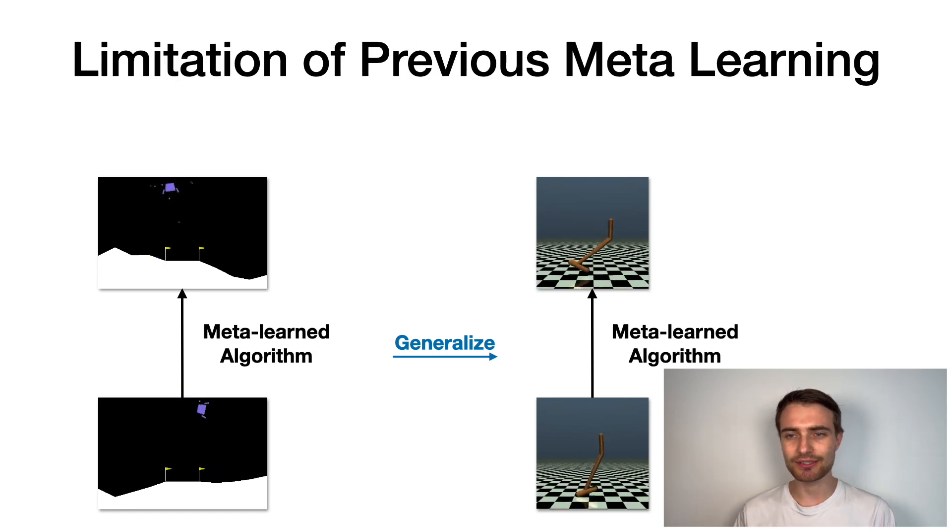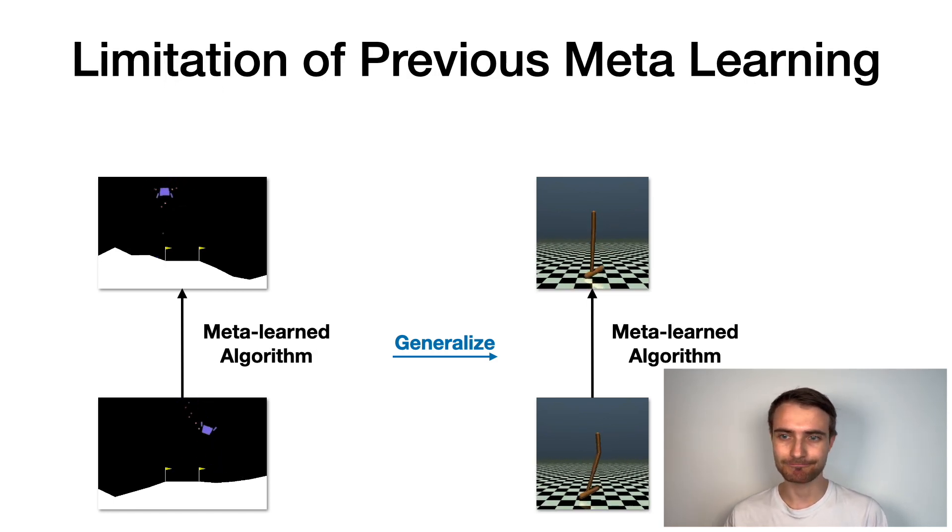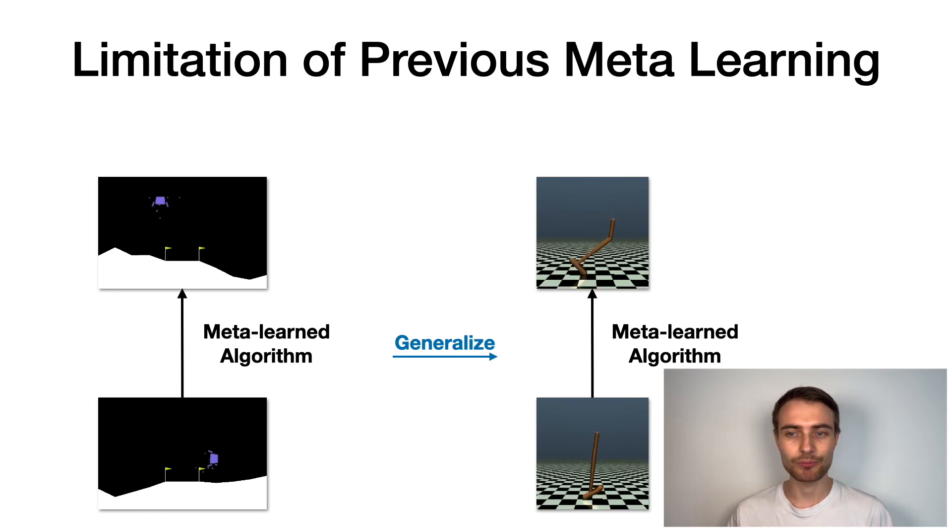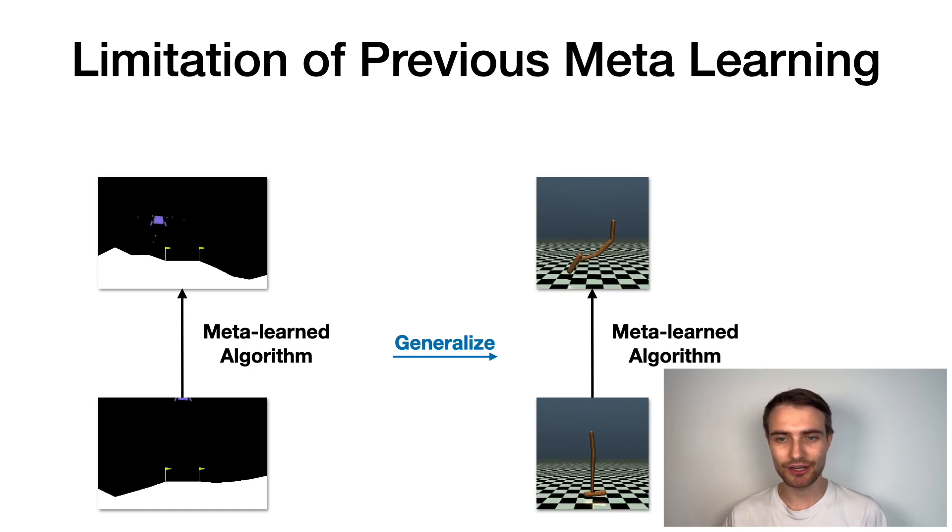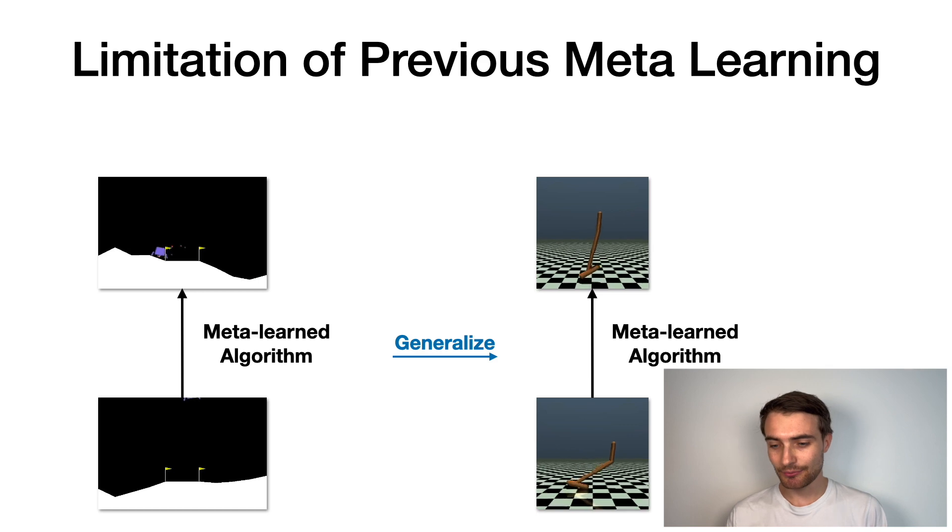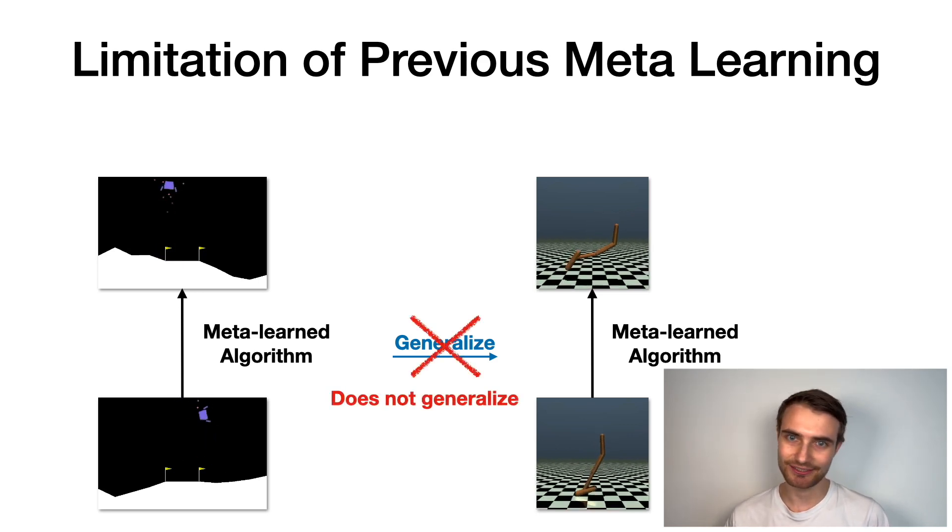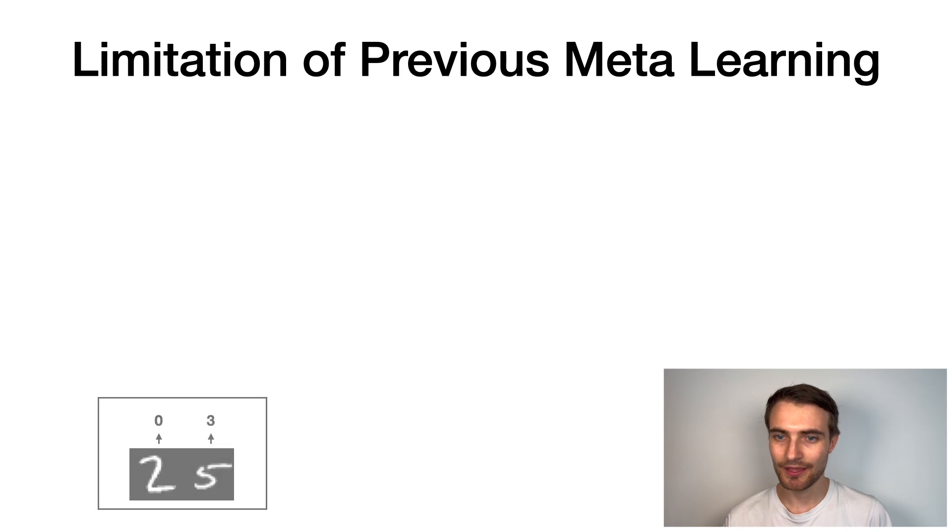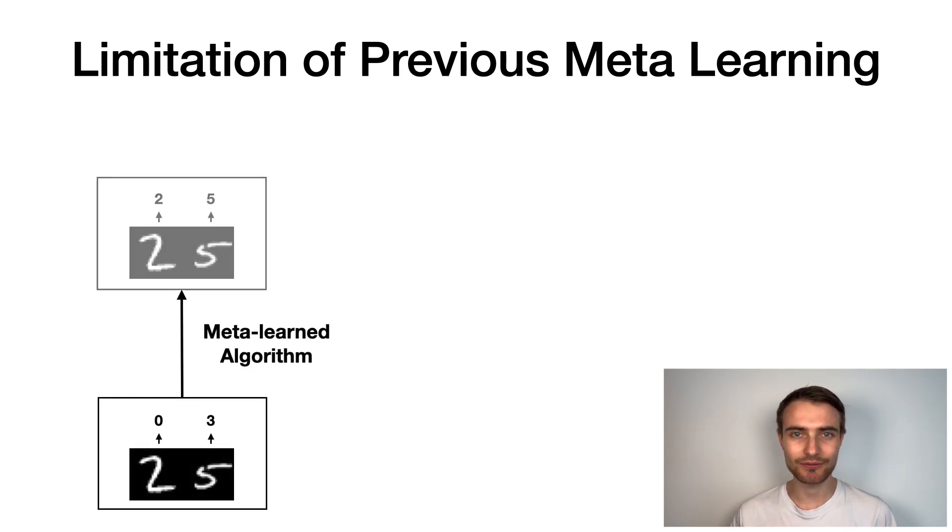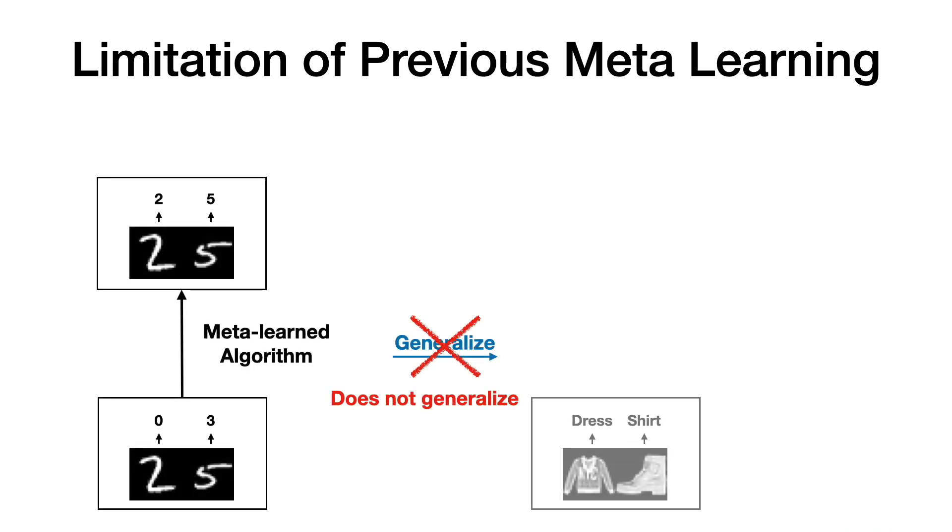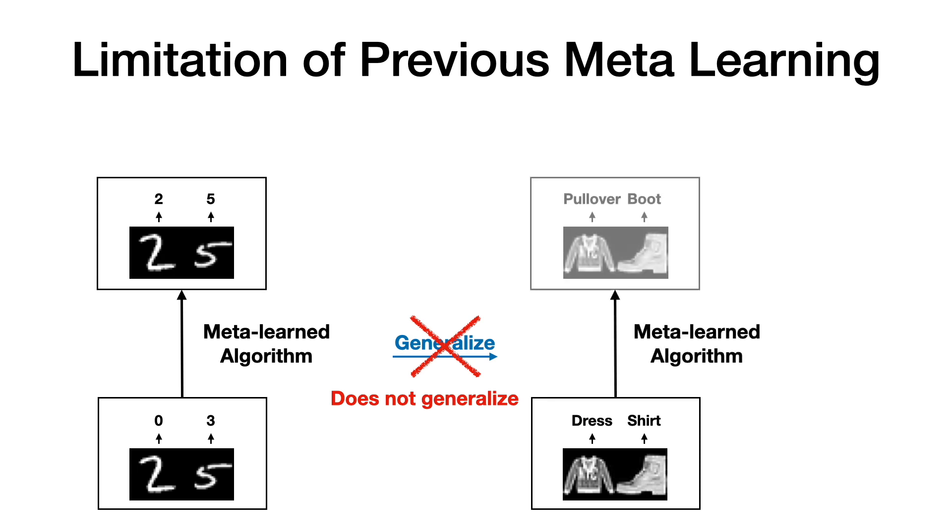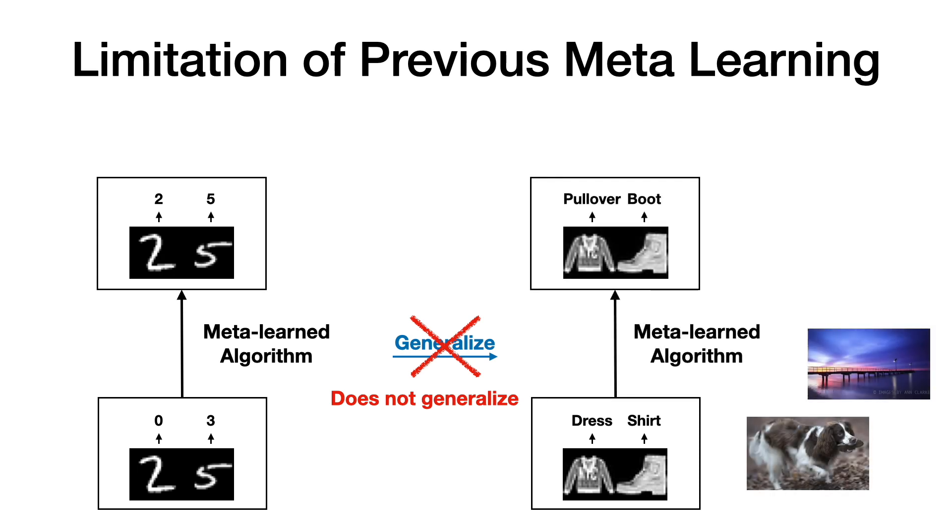Unfortunately, most meta-learning to date would not fit this bill. The meta-learning algorithm will probably be able to adapt to variants of Lunar Lander, but when we would want to use the algorithm in the Hopper environment, it would not generalize. The same issue exists in supervised learning. We would want to discover learning algorithms that don't just work on MNIST, but also on Fashion MNIST or ImageNet.